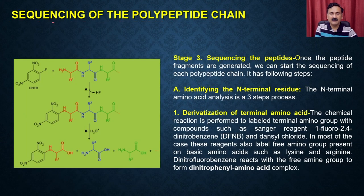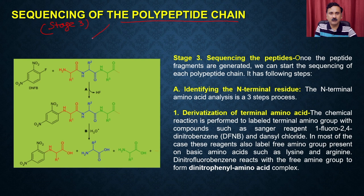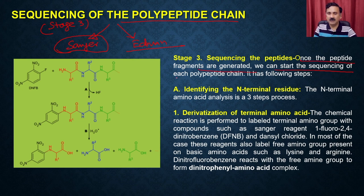In stage 3, you perform the sequencing of the polypeptide chain. You will have multiple polypeptide chains, and for sequencing you can use two methods: Sanger's method or the Edman degradation method. Once the polypeptide fragments are generated, you start sequencing each polypeptide chain.